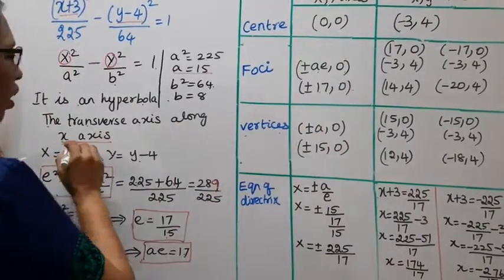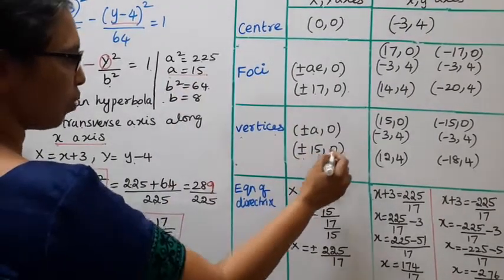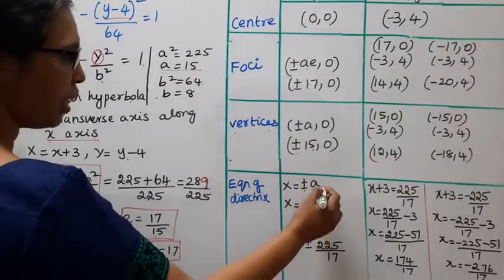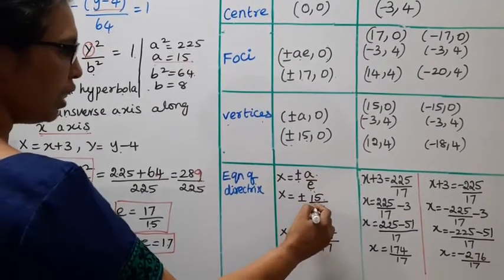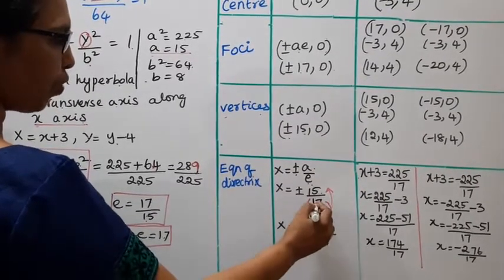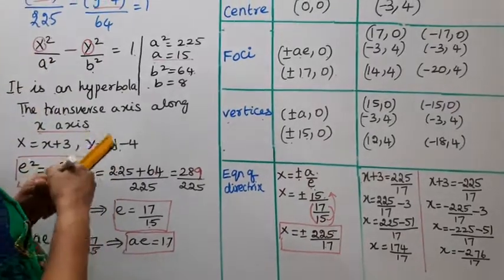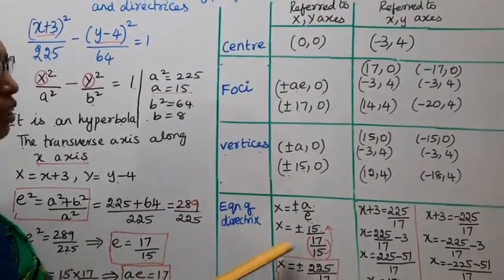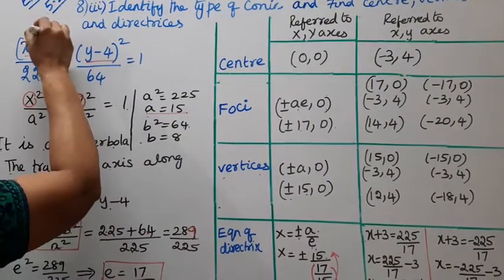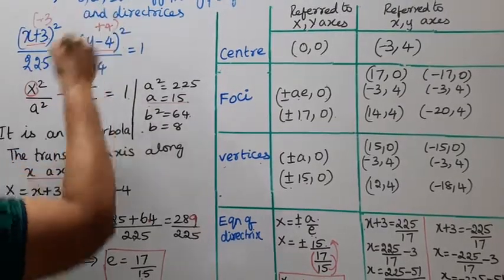The vertices along the x-axis are at (±a, 0) = (±15, 0) in capital X, Y. The equation of directrices along the x-axis is X = ±a/e = ±(225/17). Now referring back to small x, y: since x is replaced by x+3, we substitute x+3 for X, and y-4 for Y.